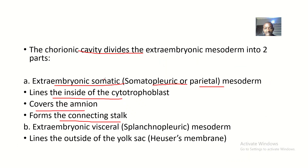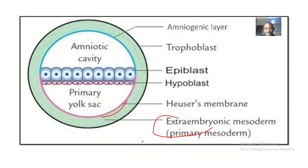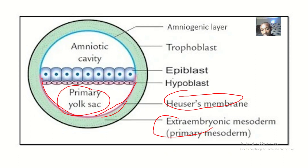The chorionic cavity also divides the extra embryonic mesoderm into the extra embryonic visceral, or splanchnopleuric, mesoderm. This mesoderm lines the outside of the yolk sac — that means it is the Heuser's membrane. It lines outside the yolk sac, and the primary yolk sac is inside.